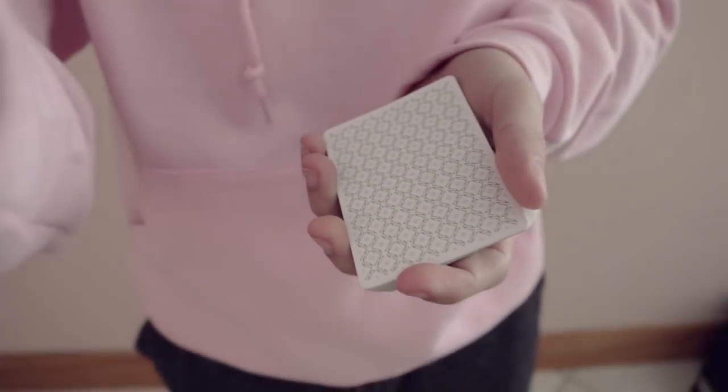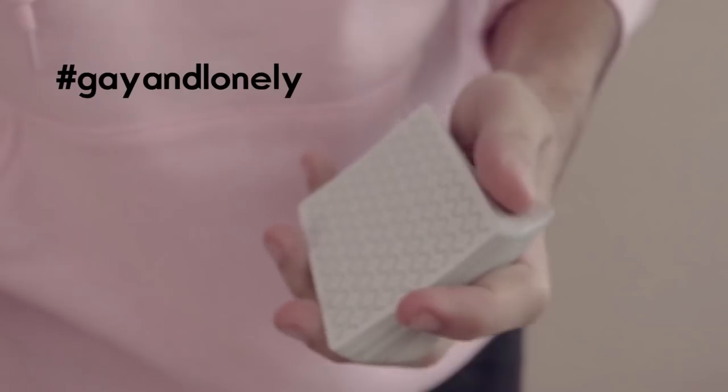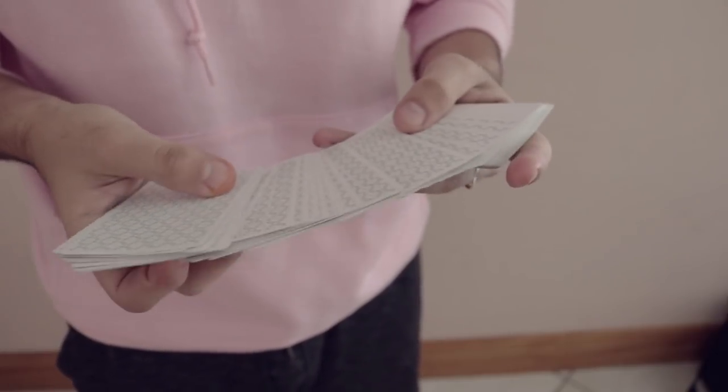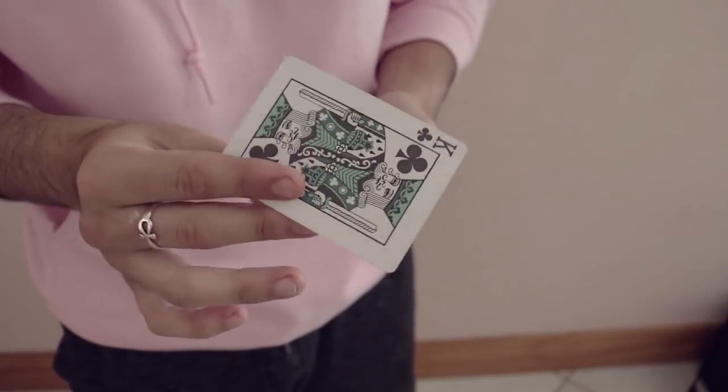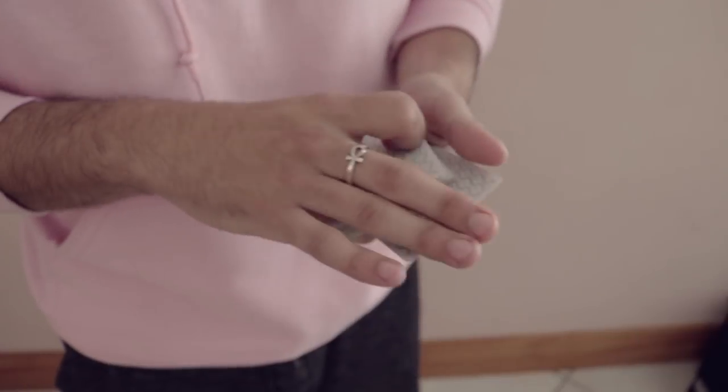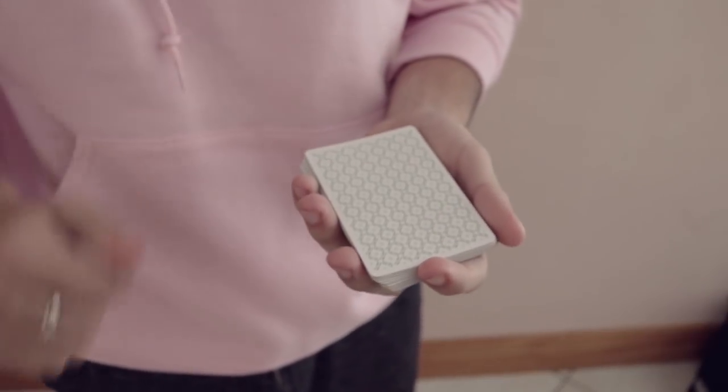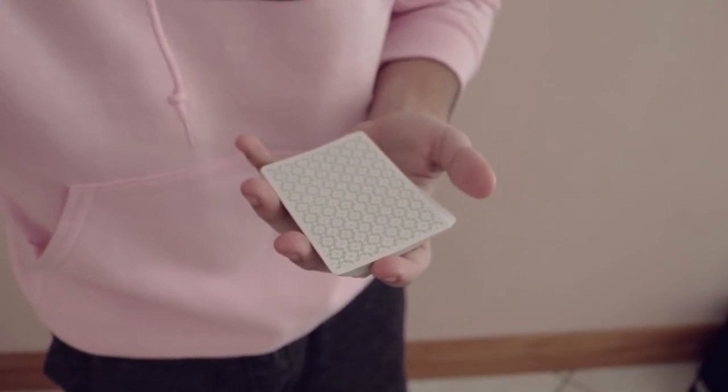So for this particular card trick, we're going to need a card selected. So if we have a participant here, which we don't. So we're going to need a card picked here in a fair fashion. So let's say the King of Clubs is picked. And this card is of course lost in the middle of the deck amongst the other cards to be lost forevermore in a sea of lost.